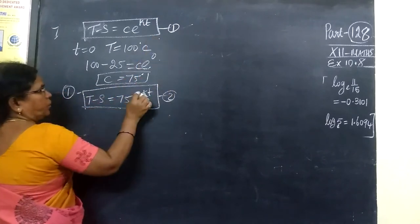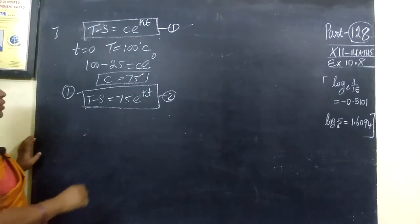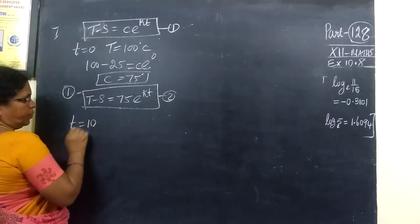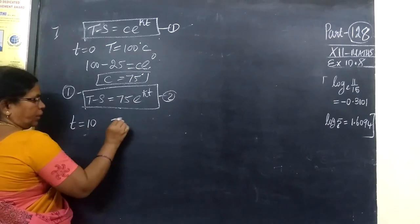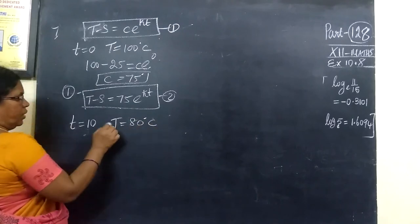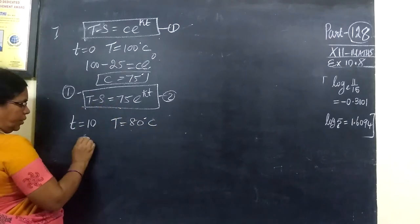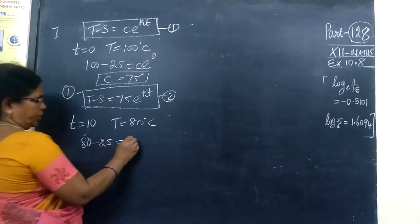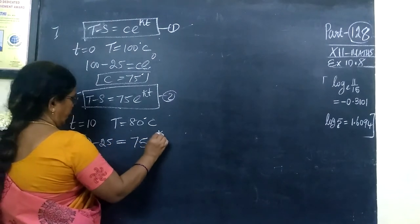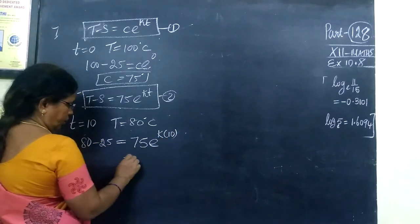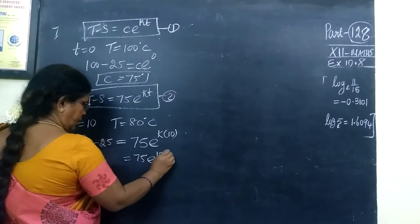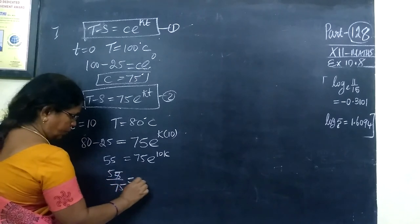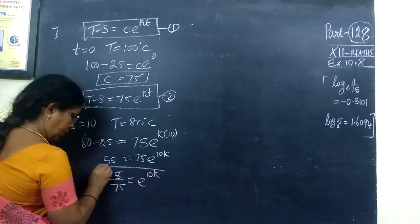The first step is over; C equals 75. Now the second step: substitute t equals 10 minutes, where capital T equals 80 degrees Celsius. We substitute T equals 80 and S equals 25, since room temperature is given as 25. So 80 minus 25 equals 75·e^(10k).